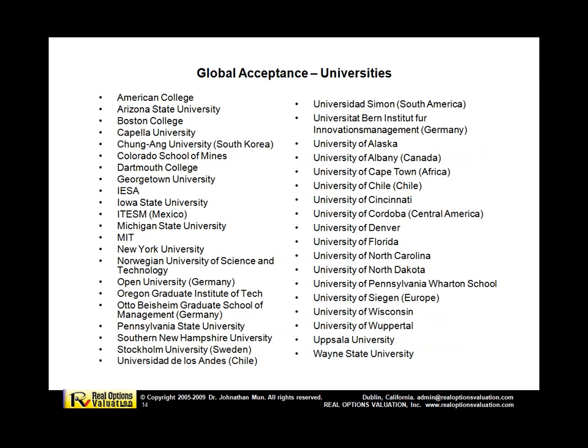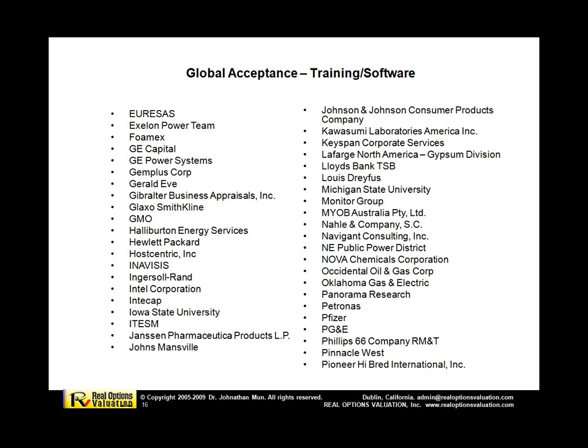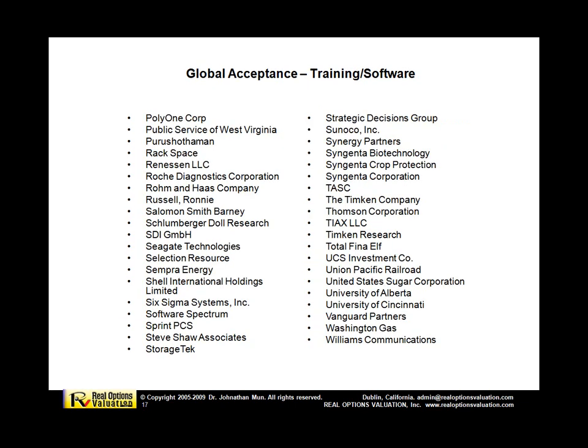Global acceptance of Real Options includes professors and companies that have used the software, books, or received consulting services — including MIT, New York University, University of Pennsylvania's Wharton Business School, and universities worldwide, as well as corporations such as BP, Boeing, Cargill, Bristol-Myers, Conoco, Eli Lilly, Johnson & Johnson, Pfizer, Pacific Gas & Electric, GE Capital, Seagate Technologies, and Syngenta in Switzerland.